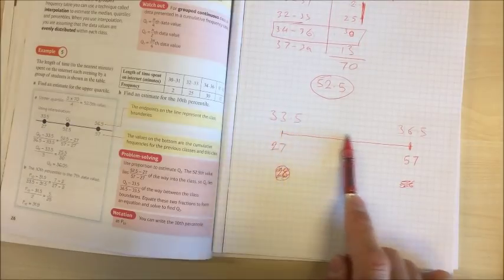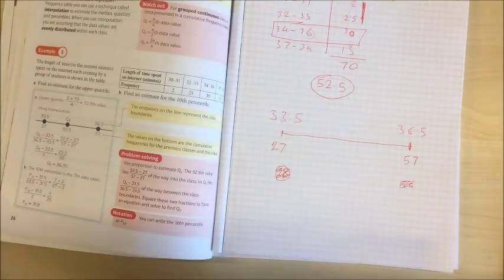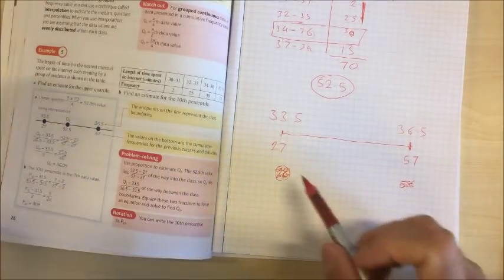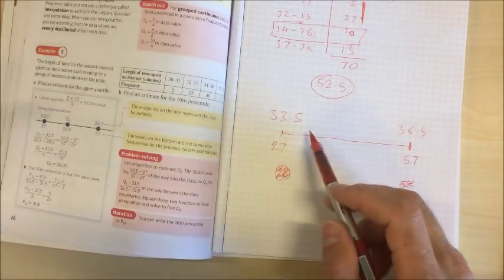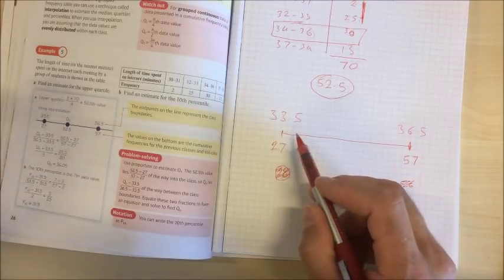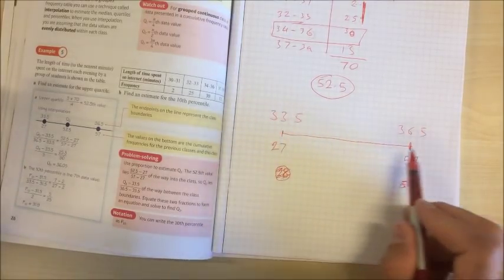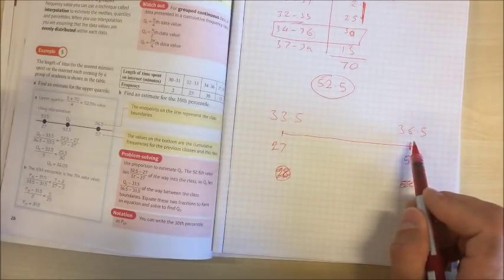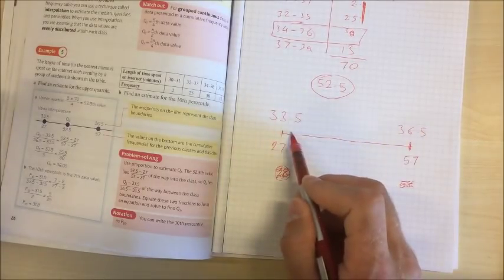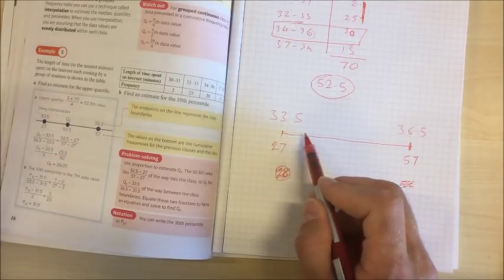So the key idea with interpolation, the thing that's absolutely vital to the whole concept, is we're going to assume that those 30 pieces of data are evenly spread out between 33.5 and 36.5. So the first piece of data is one 30th of the way along, the second piece of data is two 30ths of the way along. By the time we get halfway between 33.5 and 36.5 we're at the 15th piece of data and so on.